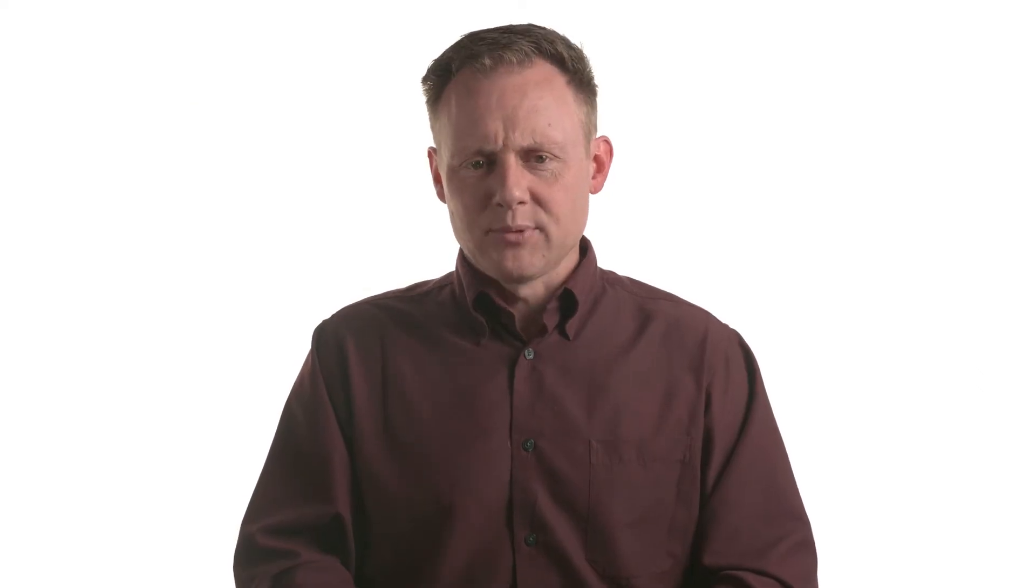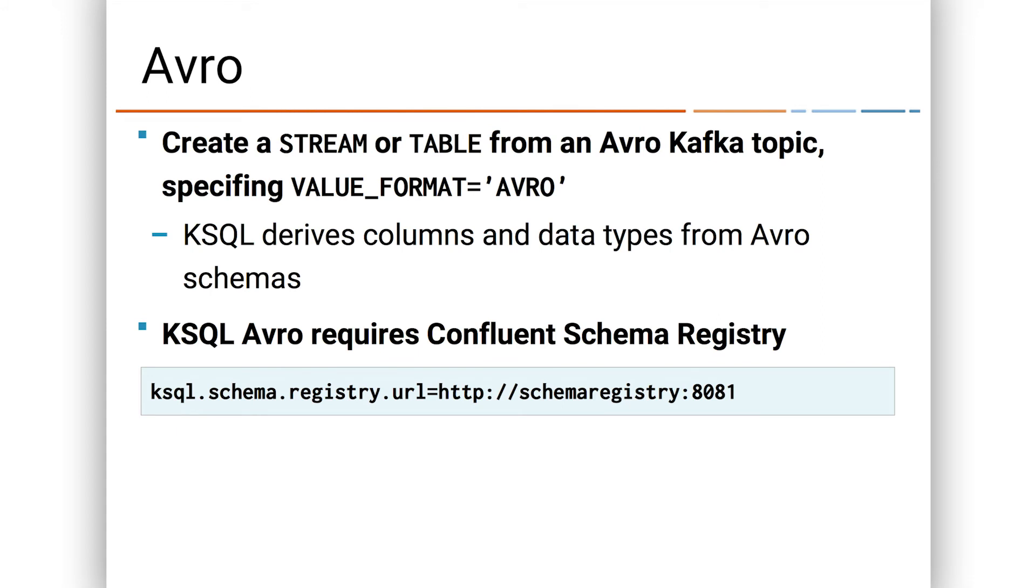And just to recap on types, when we're making a new stream or table from an existing topic, that is not from another stream or table, but from an existing topic like we've shown so far, you have to identify the format of the Kafka message value. And that's either Avro, JSON, or what we call delimited, which we really mean CSV. Now delimited is not a format that is used as often, but could be handy for some data integration purposes. If you've got some say Kafka Connect process or other producer that's producing CSV into a topic, well, you could make a table or a stream out of that and kind of pull the schema out as needed. Avro and JSON are, of course, much more common.